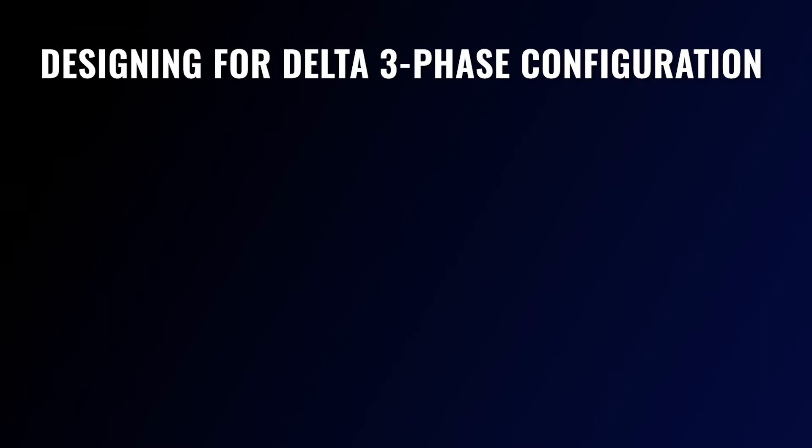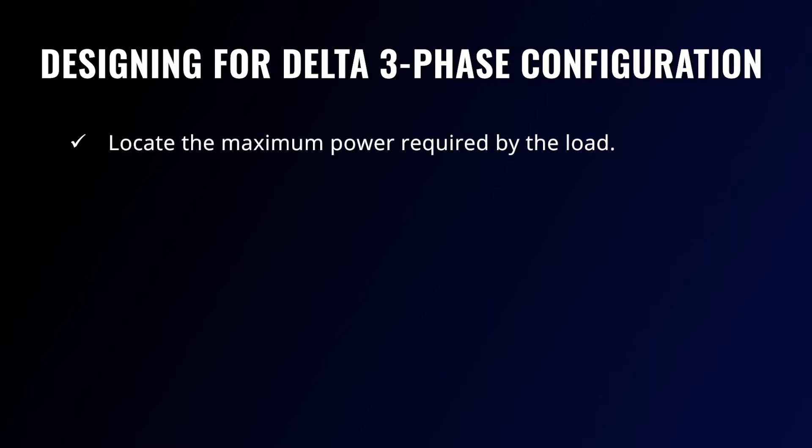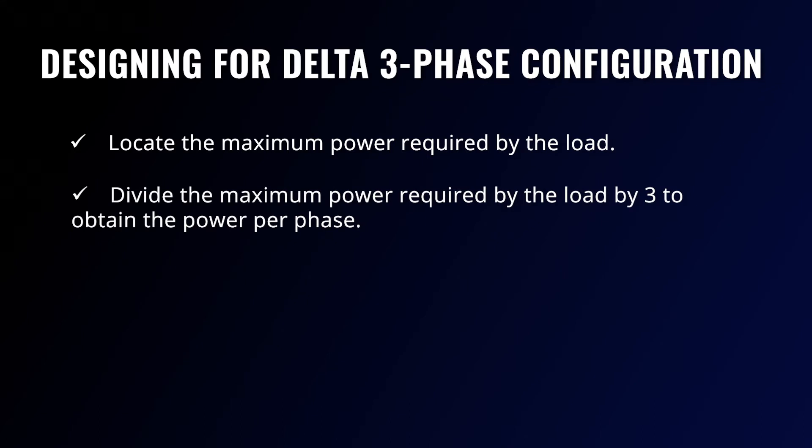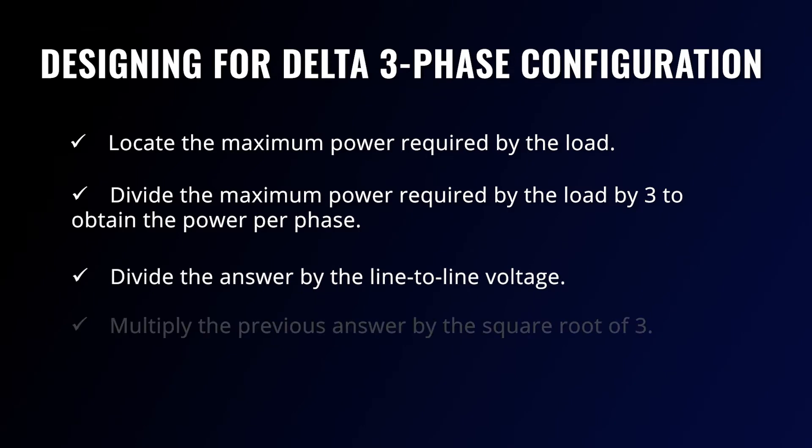Because of the absence of the neutral wire, capacitors used in delta three-phase EMI filters have to be rated for the line-to-line voltage, which can increase the size, weight, and cost. To design for delta three-phase EMI filters, you must locate the maximum power required by the load, divide the maximum power required by the load by three to obtain the power per phase, divide the answer by the line-to-line voltage, and multiply the previous answer by the square root of three. Delta configurations can typically be designed to handle higher currents more frequently. They are usually set up for heavy-duty applications and are preferable for power generation and transmission. It is also considered a simpler configuration.